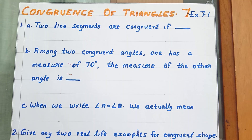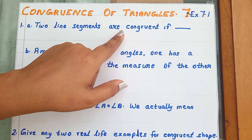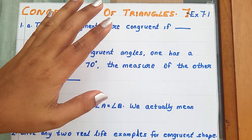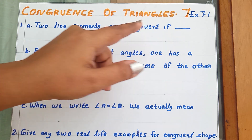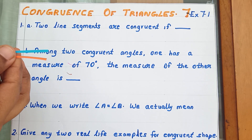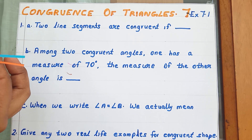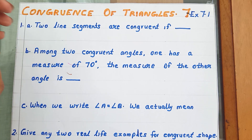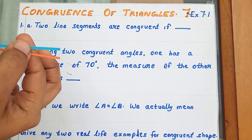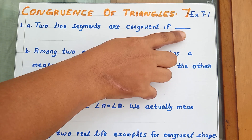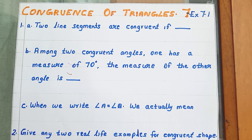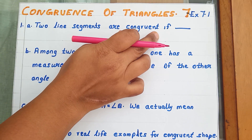The first section is filling the blanks. 'Two line segments are congruent if...' — we need to fill in a condition. I have brought two line segments, and if we keep one over the other, both will match. That means these two lines are congruent, so both are having the same length.